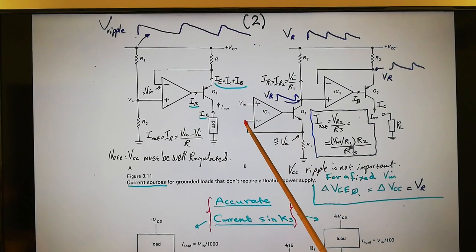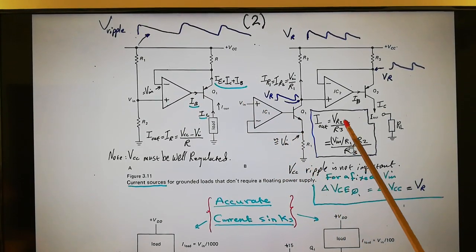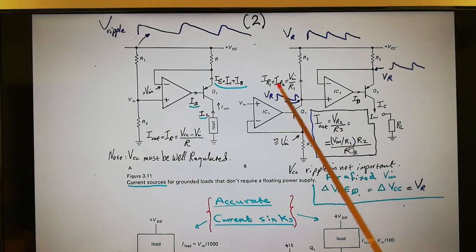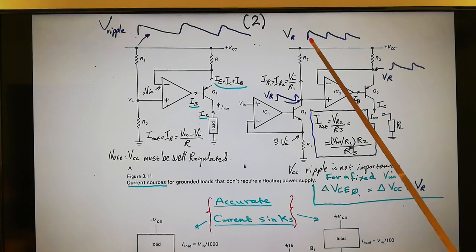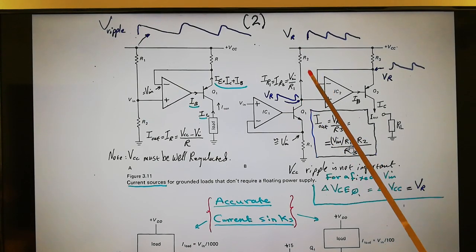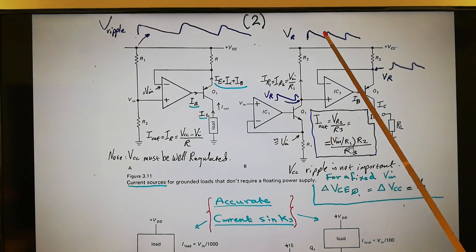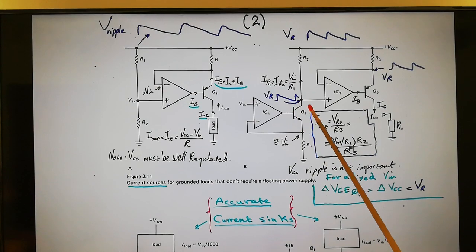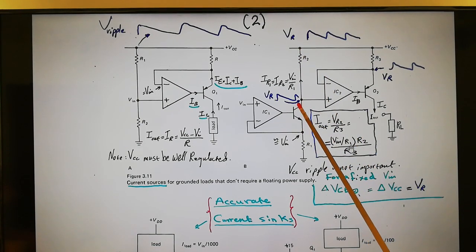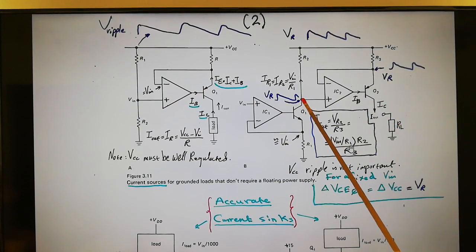VIN is presented across R1 and also across R2, setting a current through R1 equal to the current through R2: IR1 = IR2 = VIN/R1. When there is a ripple voltage, the ripple appears at the collector of the transistor, but the voltage across R2 remains fixed. The collector of that transistor absorbs the ripple, so it does not affect the current accuracy.